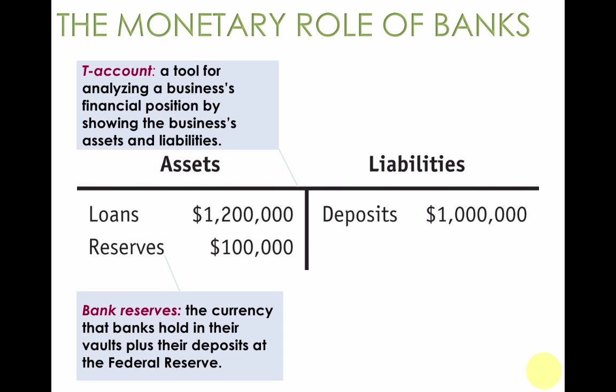Banks only earn money on the spread between the interest rate that they earn for their loans — what they charge borrowers — and the interest rate, if any, that they pay their depositors.